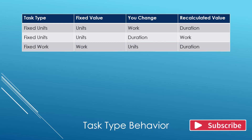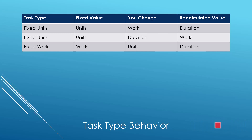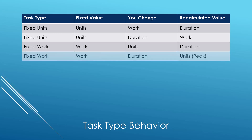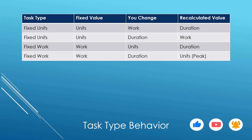On a fixed work task, the work is locked. If you change the units, Microsoft Project will recalculate the duration — it's the only number left. On a fixed work task, the work is locked. If you change the duration, Microsoft Project will recalculate the units value, but it'll store it in a new field called the peak field. I'll show you this in just a moment.